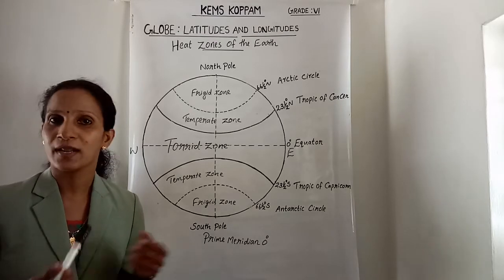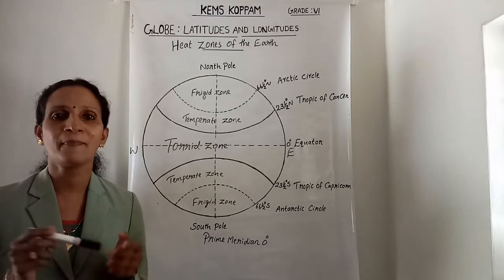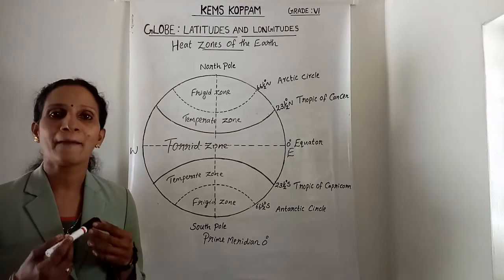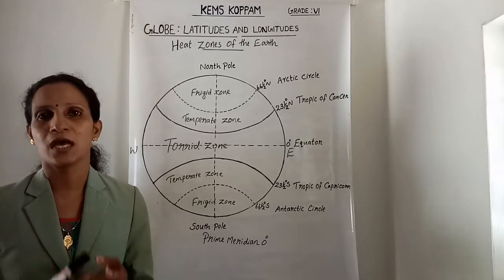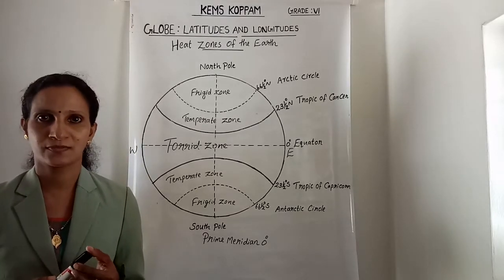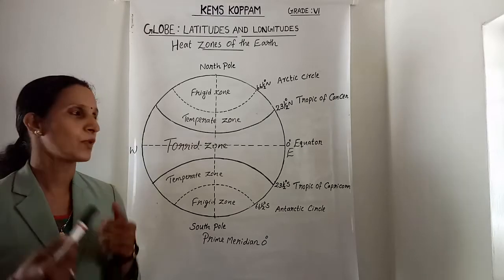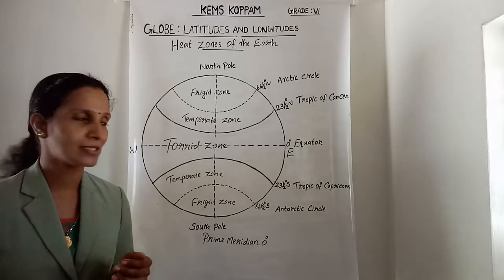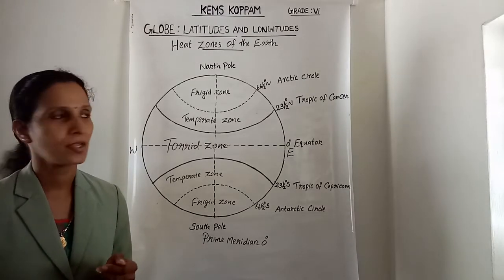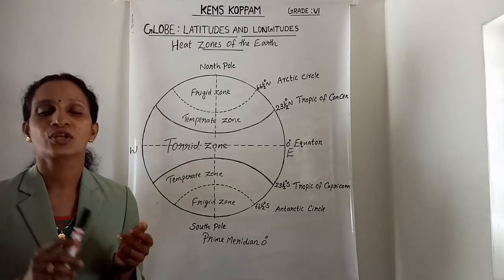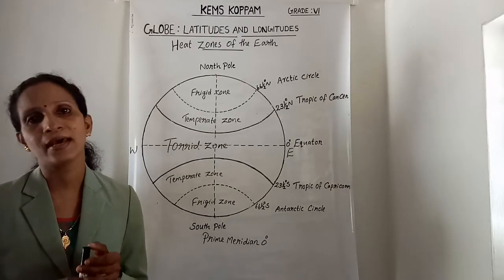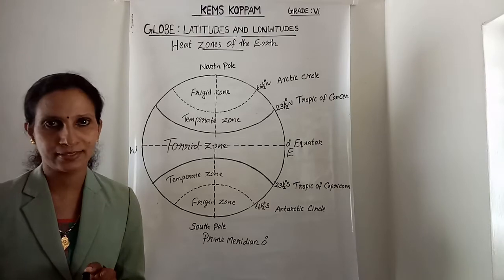So what are latitudes? All parallel circles from the equator up to the poles are called parallels of latitudes. The important latitudes are: the Equator at 0 degrees, Tropic of Cancer, Tropic of Capricorn, Arctic Circle, and Antarctic Circle.